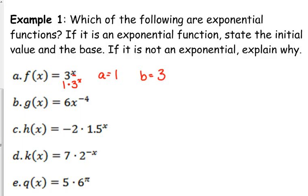b. g(x) is equal to 6 times x to the negative 4. That is not exponential. What type of function is that? It's not a polynomial either. How can we rewrite that? We move them to the bottom, right? What type of function is that? Rational. When there's a variable in the denominator, it is a rational function.